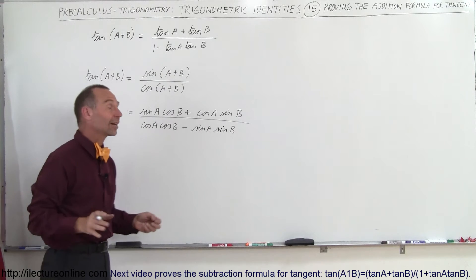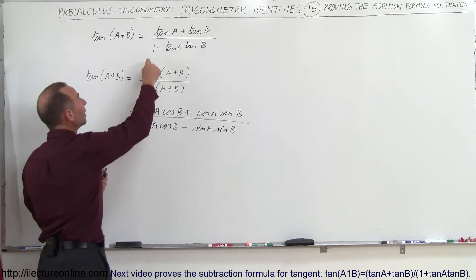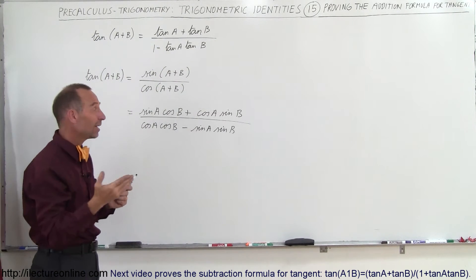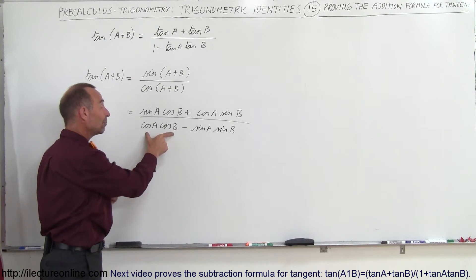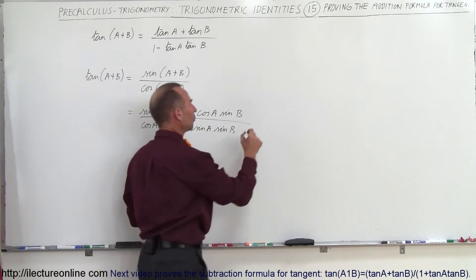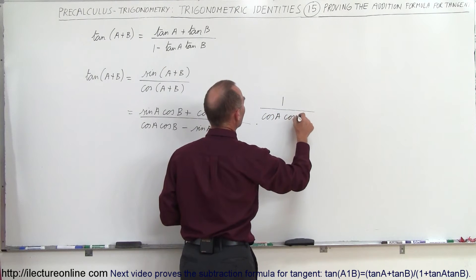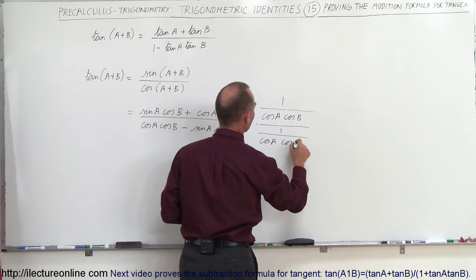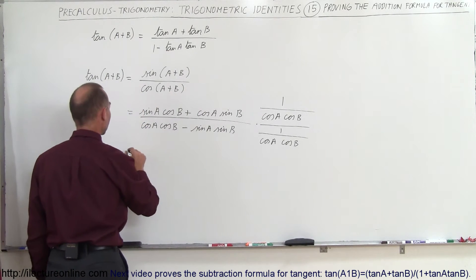This is where most people get stuck because if you don't know the trick, it's very difficult to go on from here. Remember, you need to end up with a 1 somewhere. So we divide the numerator and the denominator by cosine A times cosine B, which will make this turn into a 1. That gives us times 1 over cosine A cosine B, divided by 1 over cosine A cosine B.